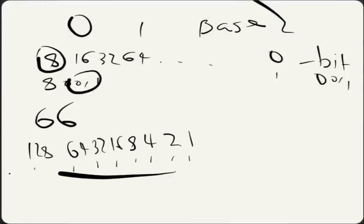Does 128 go into 66? No, it doesn't. So, remembering our switches — we can either have states of 0 or 1 — we put a 0 in, because that's false. Does 64 go into 66? Yes, it does, so we put a 1 there. Does 64 plus 32 — so we're adding these numbers as we get a 1 — does 96 go into 66? No, it doesn't.